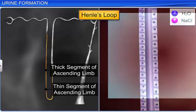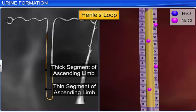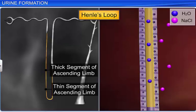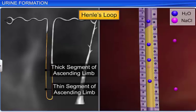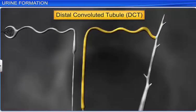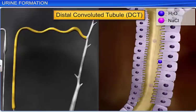The ascending limb is permeable to electrolytes, actively or passively, and is impermeable to water. Therefore, electrolytes pass into the medullary fluid and dilute the concentrated filtrate as it passes upwards. Henle's loop is followed by the distal convoluted tubule, where conditional reabsorption of water and sodium occurs.